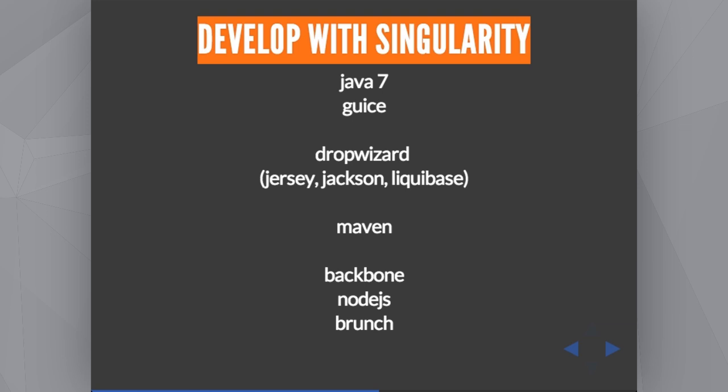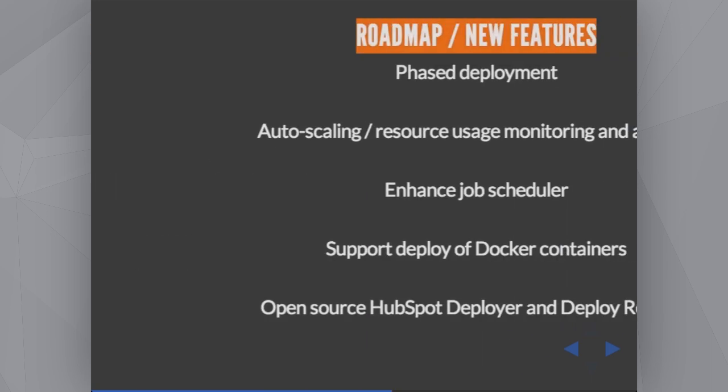Singularity is open-sourced. It has very nice and clean code and we would be delighted to have contributions. We use Guice for dependency injection, Dropwizard to create the endpoints, Maven to build it, and the UI is a single-page app created with Backbone, Node.js, and Handlebars.